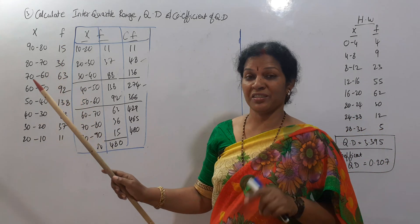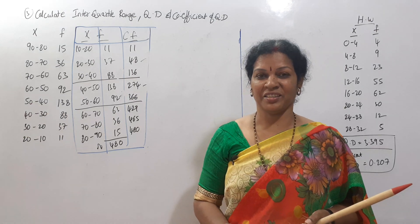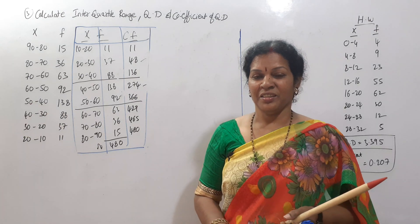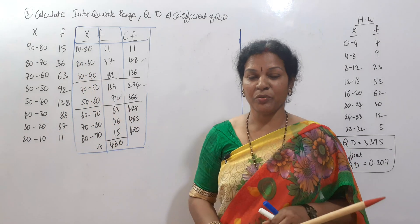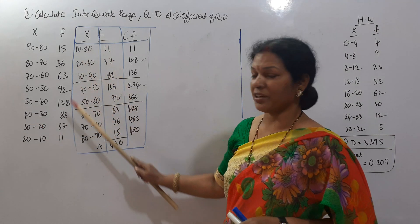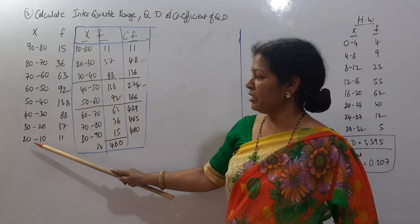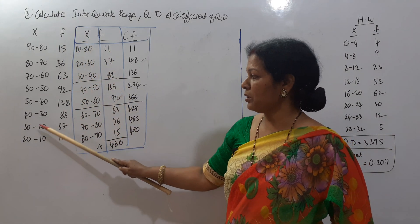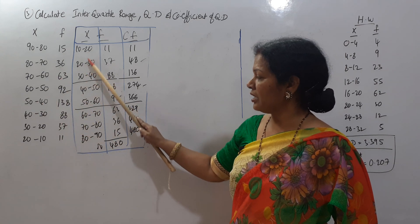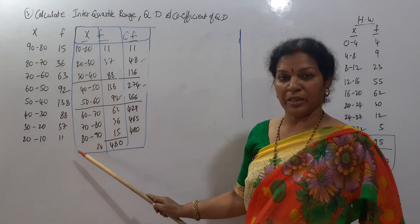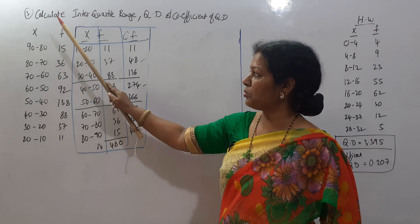The x values are given in descending order. If we have values in descending order, we need to convert them to ascending order. I have already done it. So in ascending order we have class intervals: 10 to 20, 20 to 30, 30 to 40.